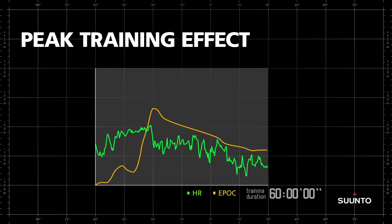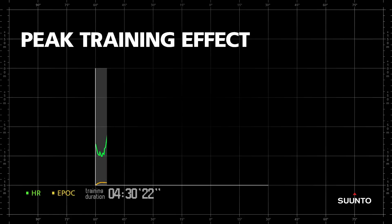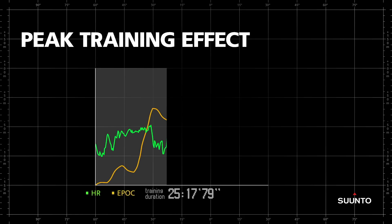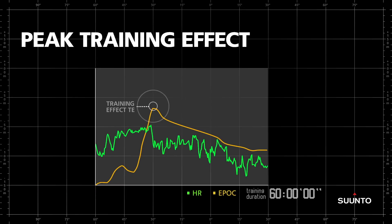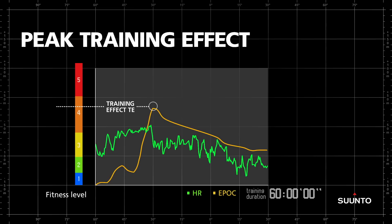As you can see from the yellow line, EPOC starts accumulating from the very start of this one-hour session. If you select it to be displayed during your training, you can see the estimated effect of the training session on your peak performance on a scale of one to five, from minor effect to overreaching effect.